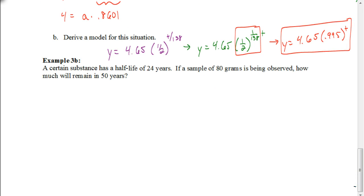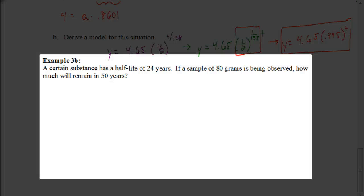So let's look at another example together. This one says a certain substance has a half-life of 24 years. So every 24 years, it's becoming half of what we had originally. If a sample of 80 grams is being observed, how much will remain in 50 years? So we're going to start out with our equation, which is a times one-half to the t divided by the number of how long a half-life is. In this case, it's 24. So I'm going to plug in my other information. We know that we had a sample of 80 grams is being observed. So that's your initial amount. That's our value for a. We want to figure out how much will remain in 50 years. So 50 would be our value for t.